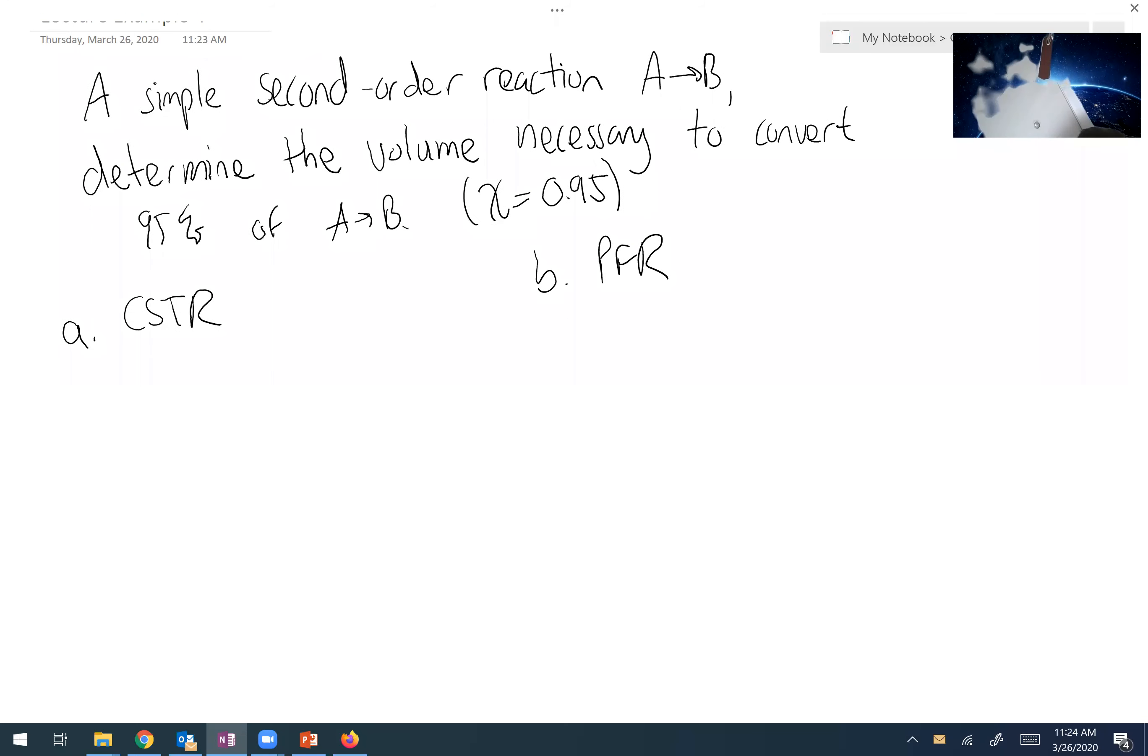So let's look initially at the CSTR. Volume can be found from the expression here which is X times FA0 over the reaction rate of A, with the reaction rate given as 0.05 times CA squared. So I can plug in the reaction rate and say X times FA0 over 0.05 times CA squared.